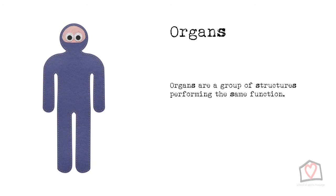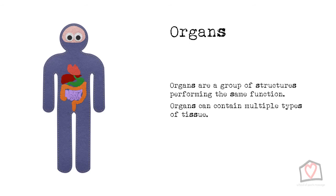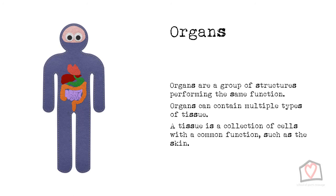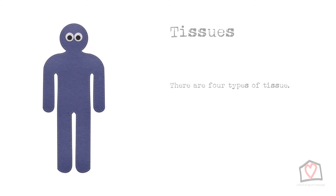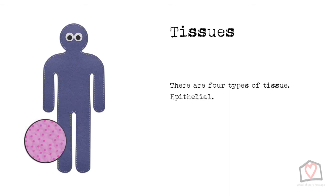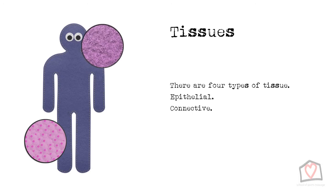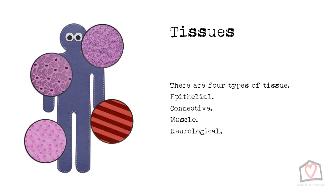Organs are a group of structures performing the same function, and can contain multiple types of tissue. A tissue is a collection of cells with a common function, such as the skin. There are four key types of tissue: epithelial, connective, muscle and neurological, which we will look at individually.